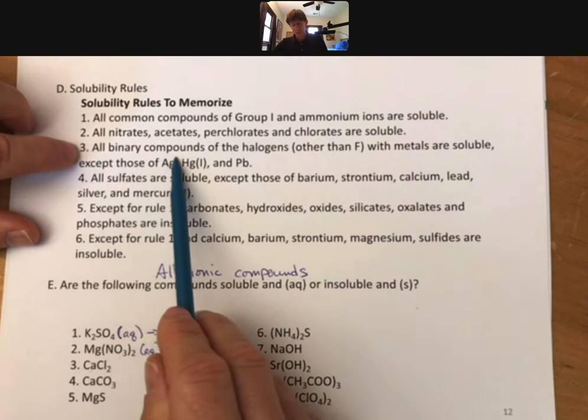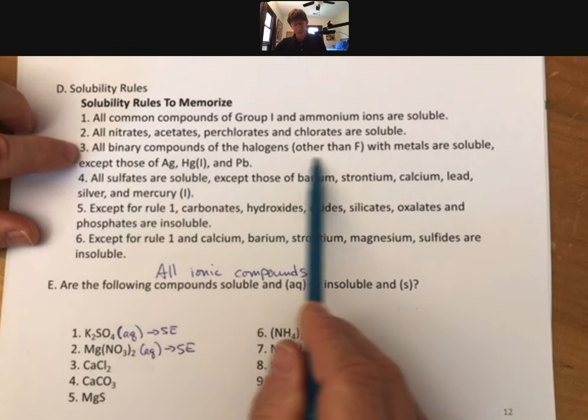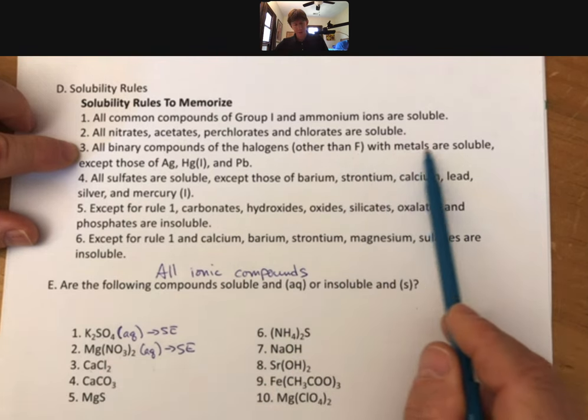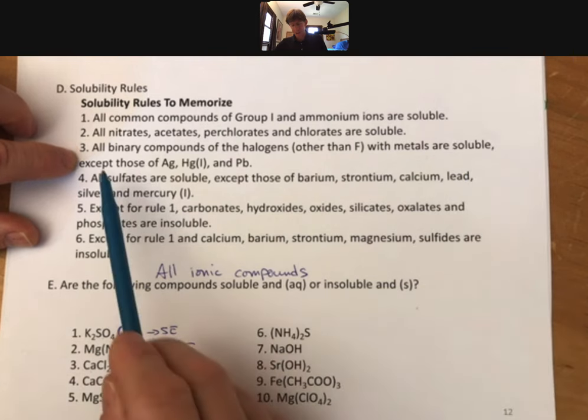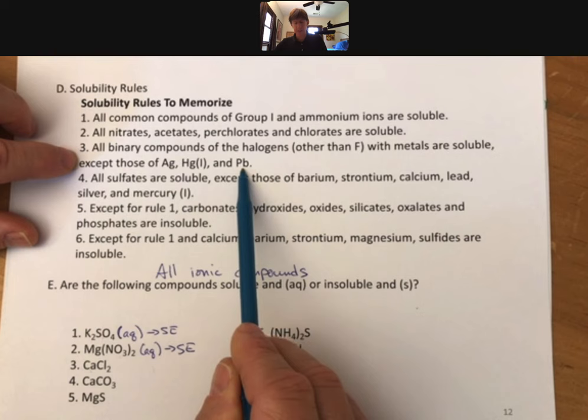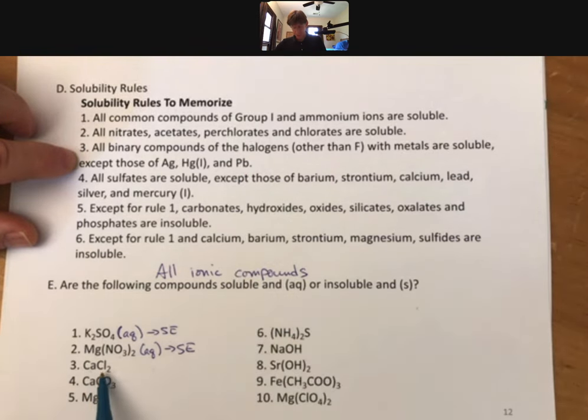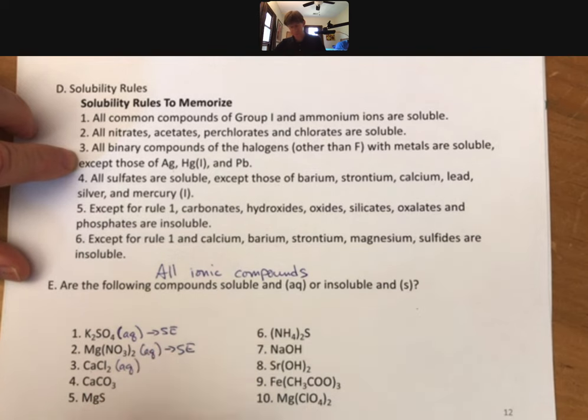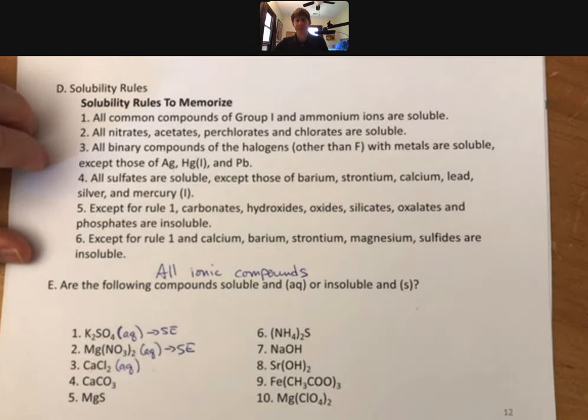Now it says all binary compounds of the halogens, other than fluorine, we have chlorine or chloride here, with metals are soluble except those of silver, mercury, and lead. We have a chloride, which is a halogen, a chlorine, and I don't see silver, mercury, or lead, also aqueous. Following along. All right.